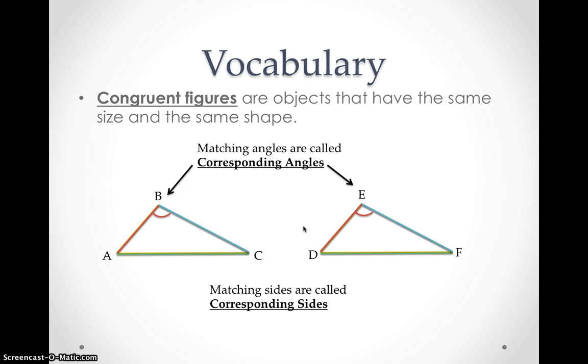It doesn't matter what position they're in. What matters is if they're the same size and the same shape. That's what makes them congruent figures. So just keep that in mind. That's going to be important to know for this entire chapter.